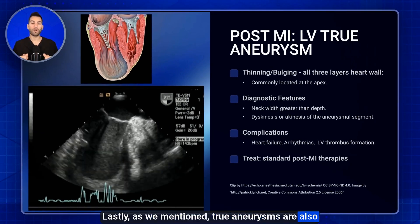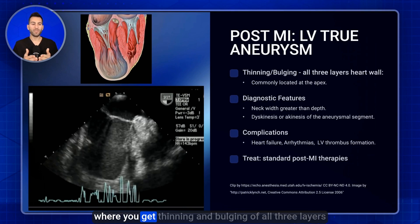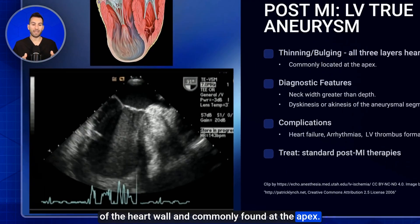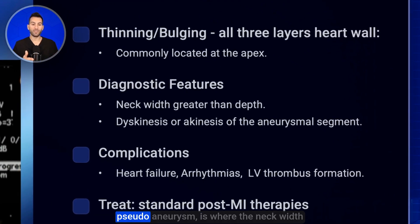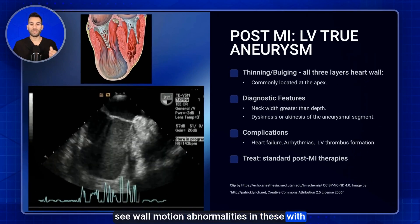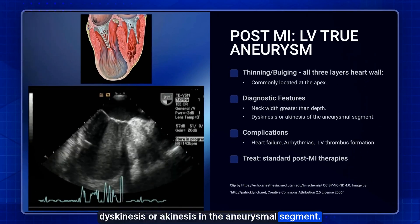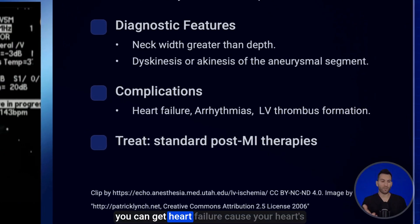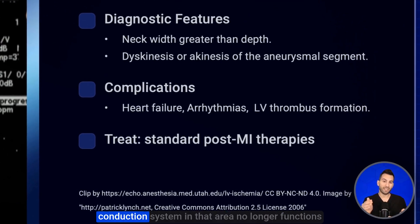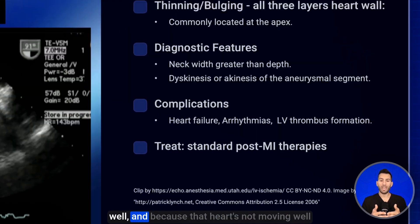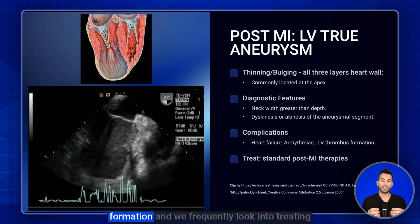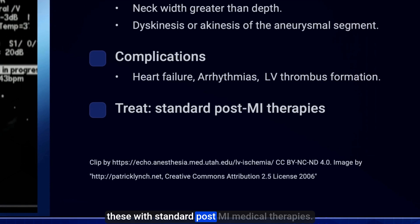True aneurysms are also a post-MI complication involving thinning and bulging of all three layers of the heart wall, commonly found at the apex. Unlike pseudoaneurysms, the neck width of a true aneurysm is greater than its depth, and wall motion abnormalities with dyskinesis or akinesis are seen in the aneurysmal segment. Complications include heart failure, arrhythmias due to conduction system dysfunction, and LV thrombus formation. These are typically treated with standard post-MI medical therapies.